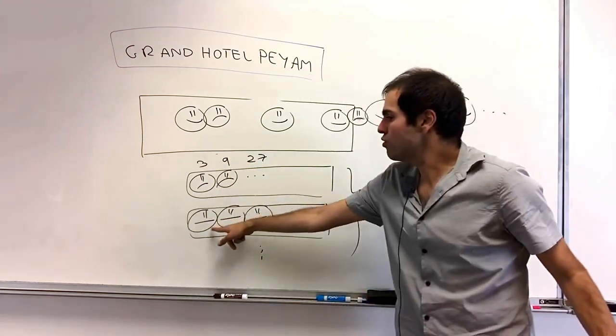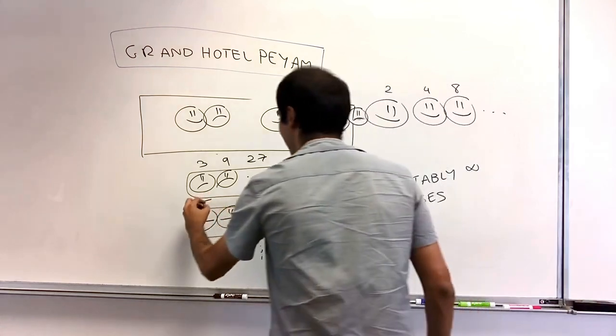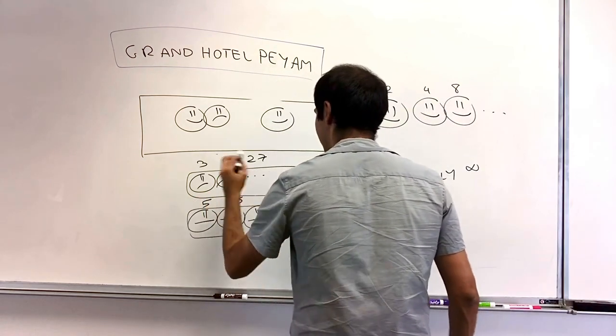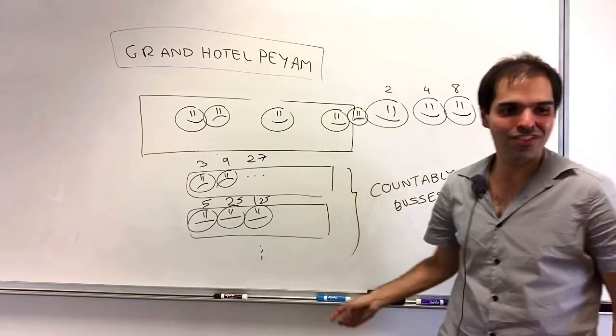This one, put them in rooms of, you know, powers of five. So five, twenty-five, hundred-twenty-five. And the next ones, put them in rooms of powers of seven.